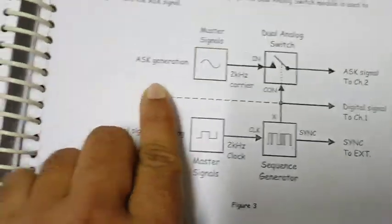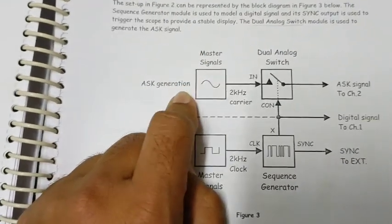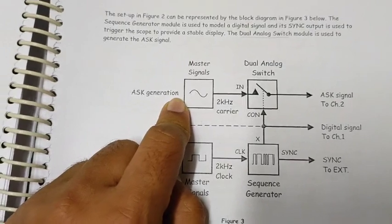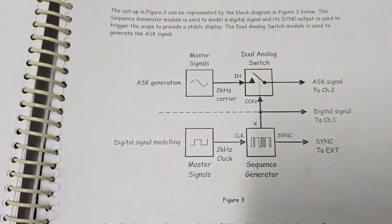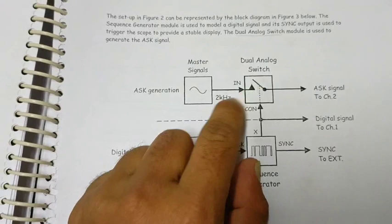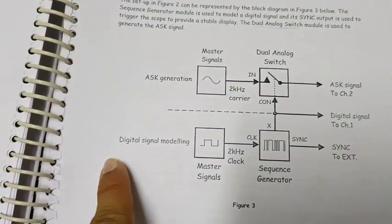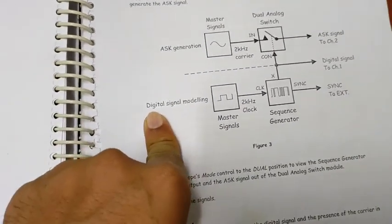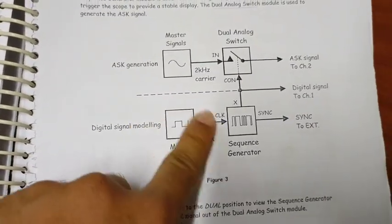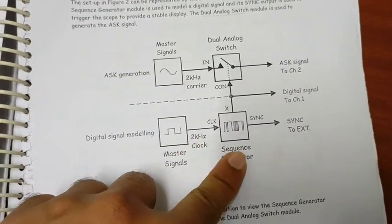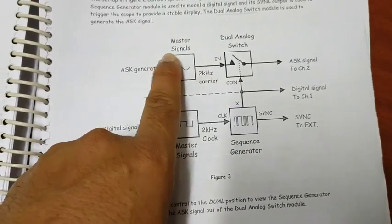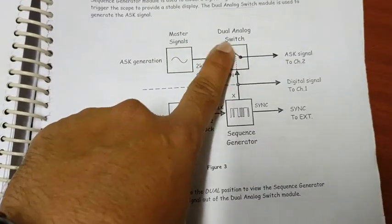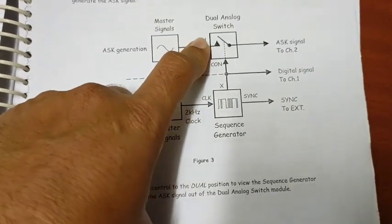In the block diagram there is ASK generation. For that there is a master signal which provides the inputs. There is a 2 kHz carrier signal, which is a sinusoidal signal, given to the dual analog switch. The second input is a sequence generator which generates the binary bit sequence. This 2 kHz carrier signal is multiplied by the binary sequence, and by this multiplication the ASK signal is generated.